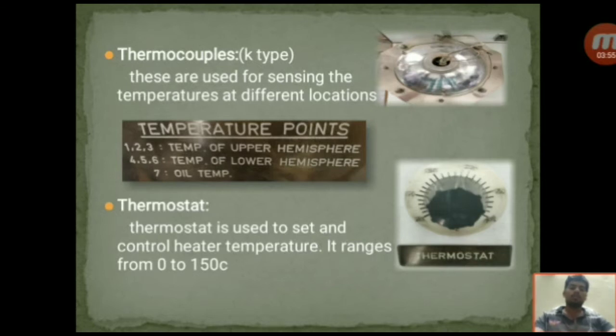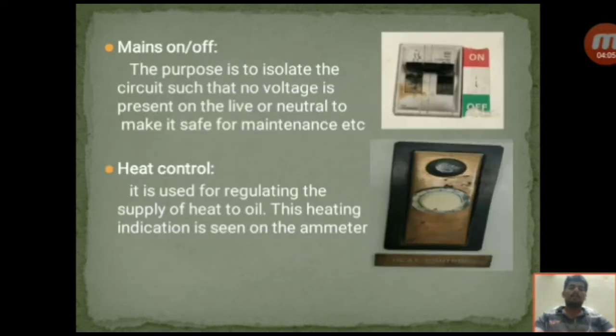Thermostat. Thermostat is used to set and control heater temperature. It ranges from 0 to 150 degrees centigrade in this setup. Main on or off. The purpose is to isolate the circuit such that no voltage is present on the live or neutral to make it safe for maintenance.